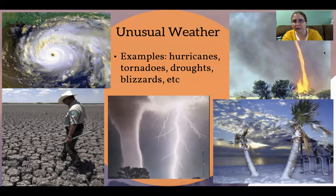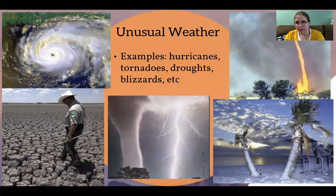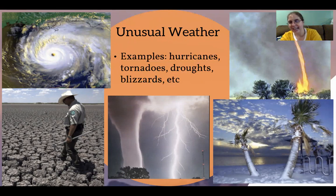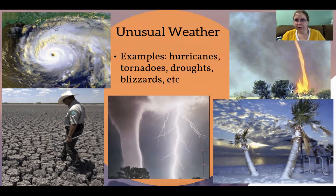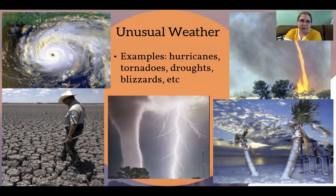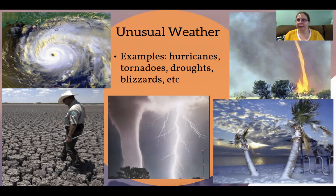First we have unusual weather — things like hurricanes, extreme droughts, tornadoes, snow in unexpected places, and even fire tornadoes. These affect the entire area: droughts cause plants to die, which causes herbivores to die, which causes carnivores to die, disrupting everything in the ecosystem.